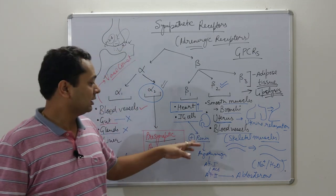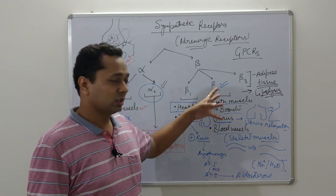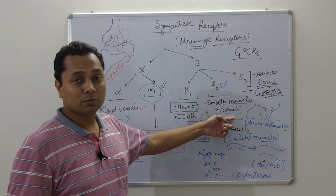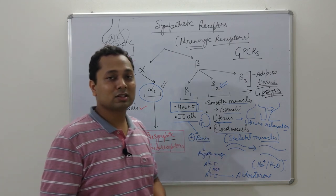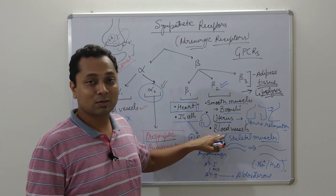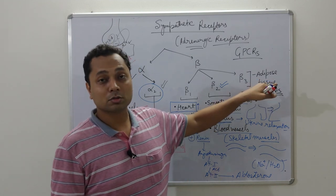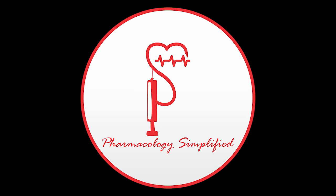Alpha-2 are pre-synaptic auto receptors that control the release of noradrenaline from sympathetic neurons. Beta-1 receptors on the heart increase rate, force of contraction, and conduction velocity; on the JG cells they promote renin release, leading to increased blood pressure. Beta-2 relaxes smooth muscles — bronchi, uterus, and blood vessels supplying skeletal muscles. Beta-3 stimulation causes lipolysis in adipose tissue. Thank you and happy learning.